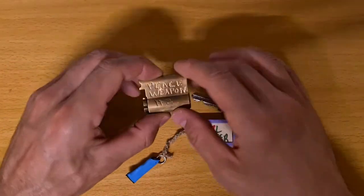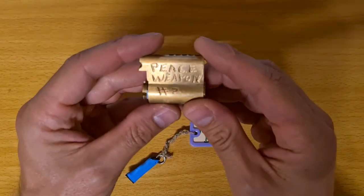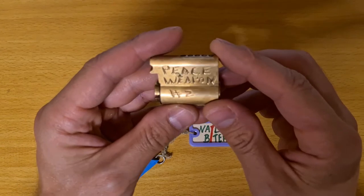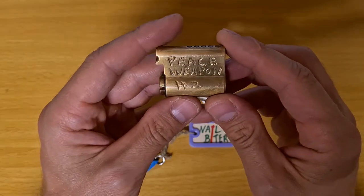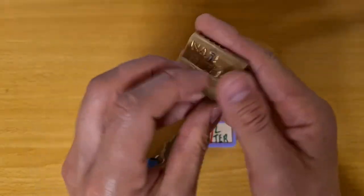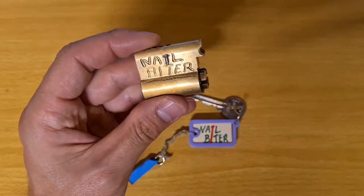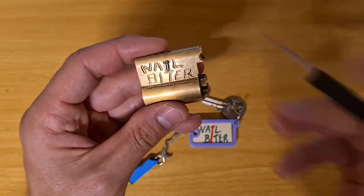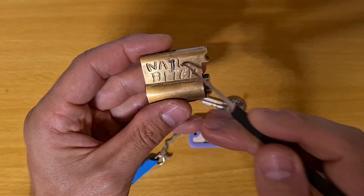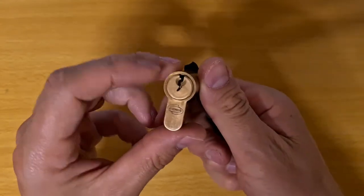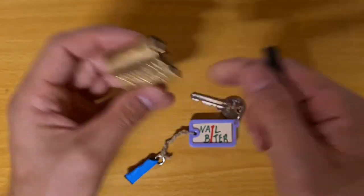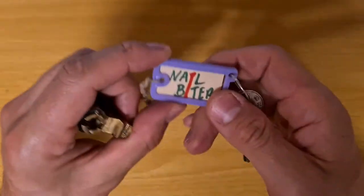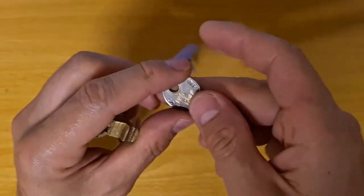Hello, this is Moon, and today I've received a very fun lock made by PieceWeapon. It's his second challenge lock, called Nail Biter, with nails pretty much everywhere, including on the outside, every single chamber, the logo, and the key.